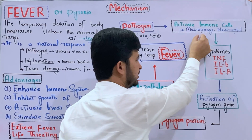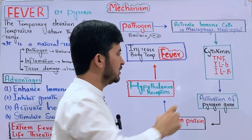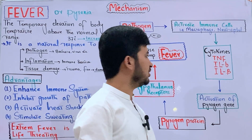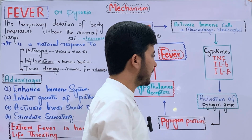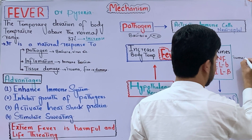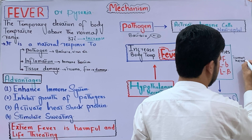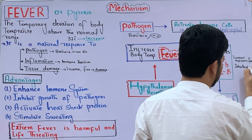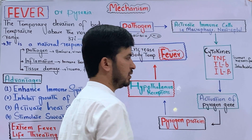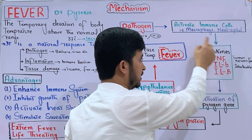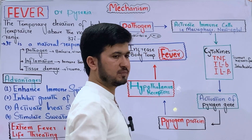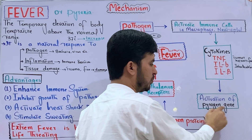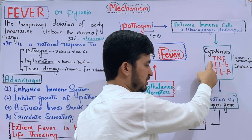When the immune cells are activated, they release chemical signals called cytokines. There are different types of cytokines released: Tumor Necrosis Factor (TNF), Interleukin-6, and Interleukin-1 beta. These cytokines released by macrophages and neutrophils then activate the pyrogen gene.